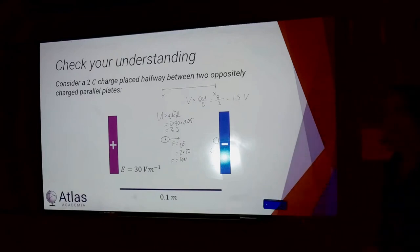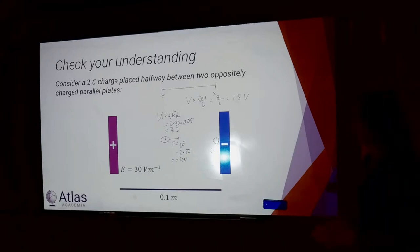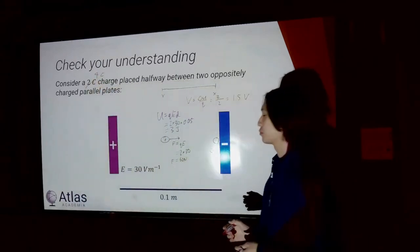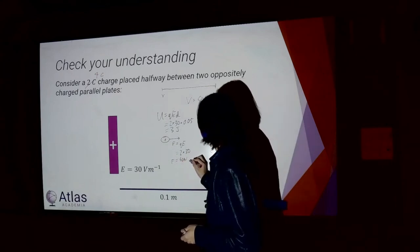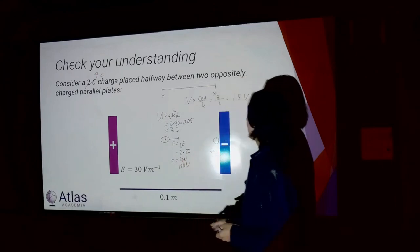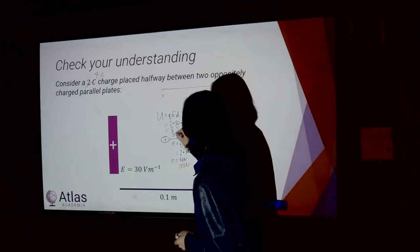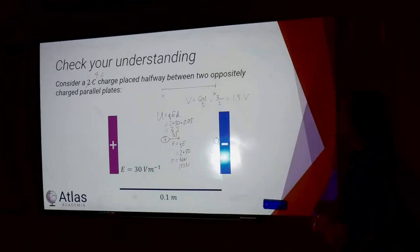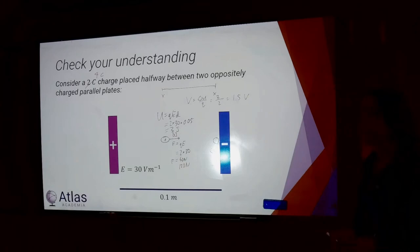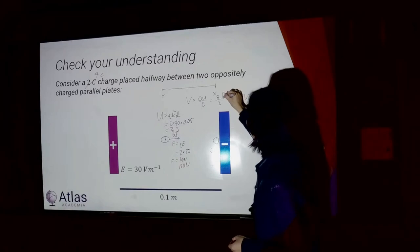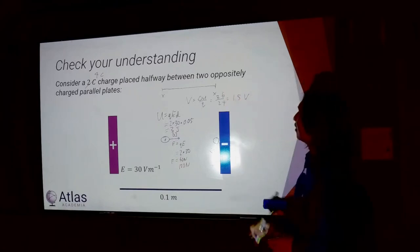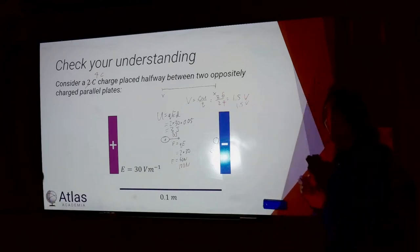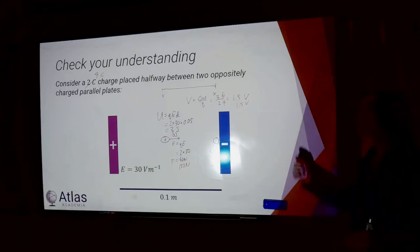Now let's do the same thing but with a four-coulomb charge and see how everything changes. The force doubles. The potential energy doubles. The final kinetic energy doubles. But the voltage? It's 6 over 4 — the Q is now 4 — so it's the same: 1.5 volts. That's exactly what we mean when we say voltage is independent of your charge.